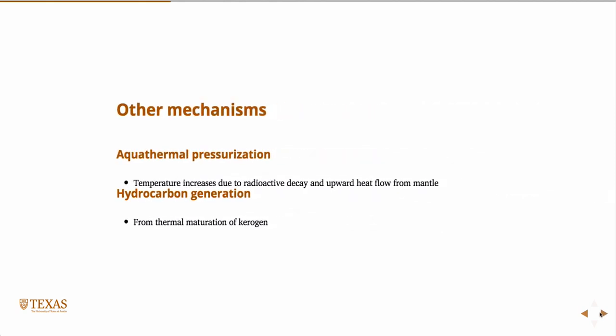So there are other mechanisms, aquathermal pressurization. By the way, we're in Chapter 2 right now, so this is Chapter 2 of the book. And if you want to read more details, there are a couple of paragraphs on all of these that I mentioned. But so aquathermal pressurization, this is simply there's radioactive material in the earth and it's decaying, which generates heat. There's also diffusion from the mantle, so heat diffusion through the surface, through the rock, upwards from the mantle. And of course, what happens to a fluid when you heat it up?